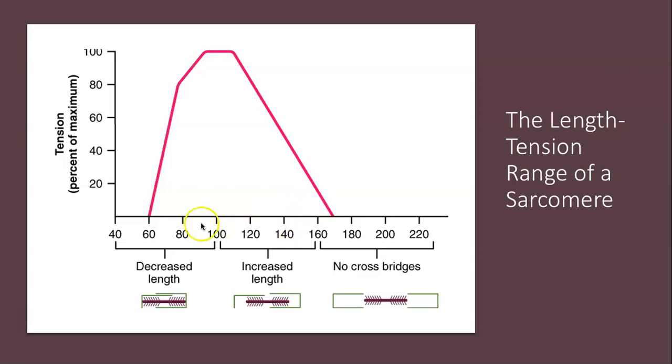If a sarcomere is stretched beyond 120 percent, the thick and thin filaments don't overlap as sufficiently, and that results in less tension produced. On the opposite end, if a sarcomere is shortened beyond 80 percent, the zone of overlap is reduced and the thin filaments really have nowhere to go at that point, and that also reduces tension.